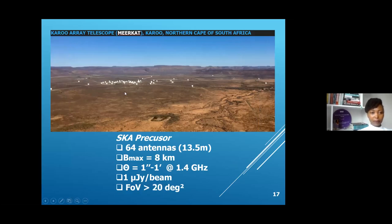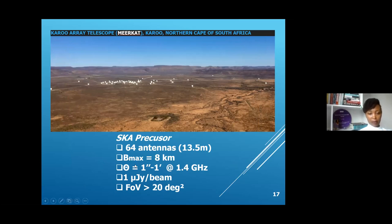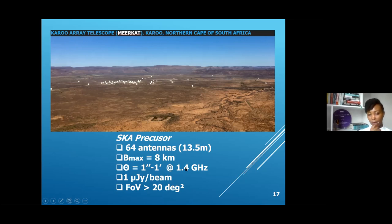This is one of the SKA precursor telescopes in South Africa called MeerKAT — the Karoo Array Telescope in the Karoo, Northern Cape. It will be an array of 64 antennas with a maximum baseline of 8 kilometers and very high dynamic angular resolution from 1 arc second to 1 arc minute at a frequency of 1.4 gigahertz, with very high sensitivity of 1 microjansky per beam and a very large field of view of more than 20 degrees squared.